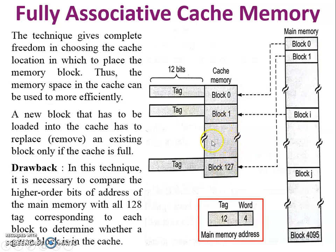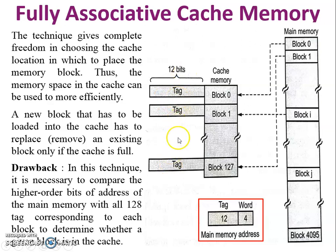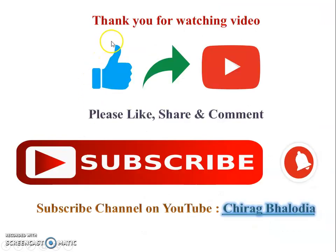If block 1 is stored in the 16th block of the cache memory, whenever a processor wants data from main memory block 1, the processor provides the address of block 1. This address is then compared with all 128 tag bits one by one. It is identified at the 16th block and that block is given to the processor. This is the main drawback of fully associative cache memory.